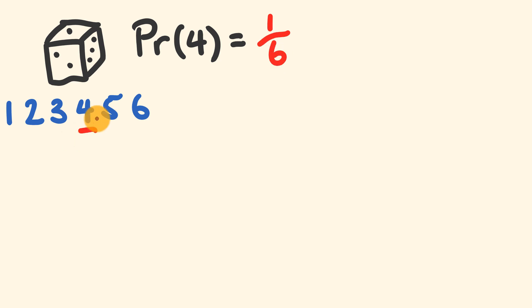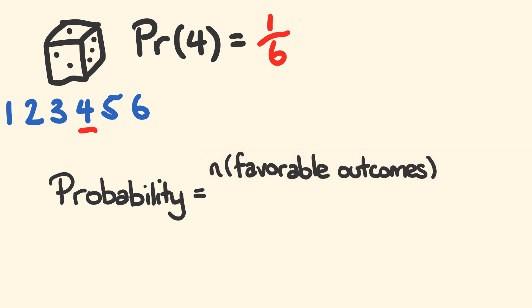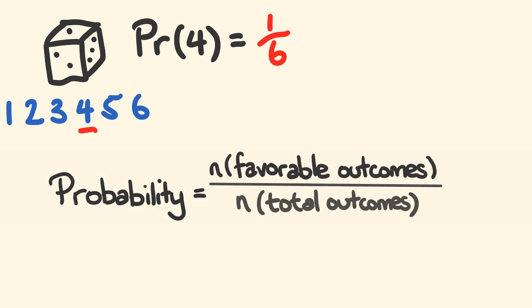There's a one in six chance of rolling that. The probability of an event occurring is equal to the number of favorable outcomes divided by the number of total outcomes. The number of favorable outcomes here is one — we're after a four — whereas the total number of outcomes is six. So we have a probability of one in six.